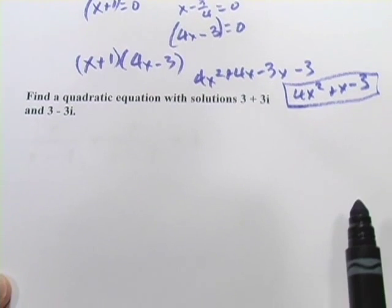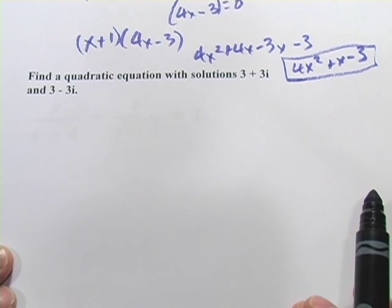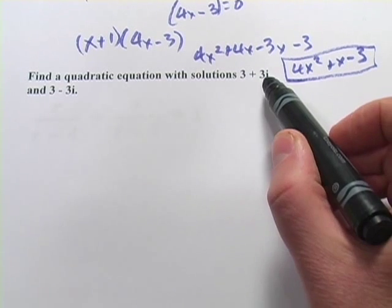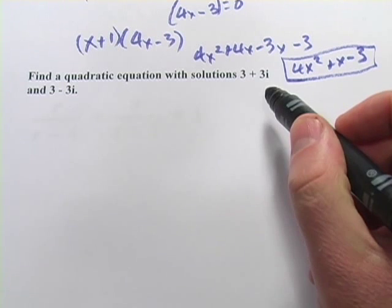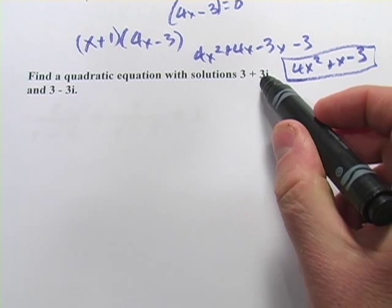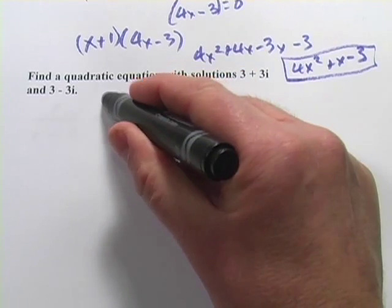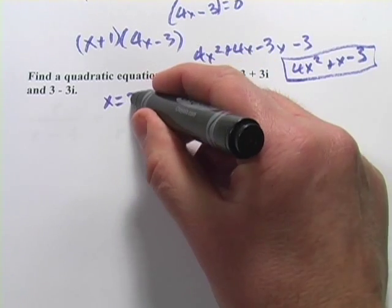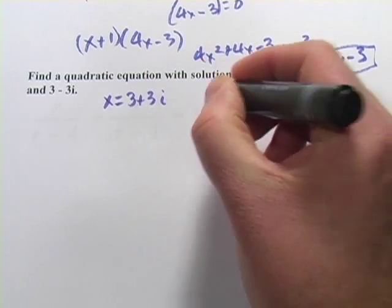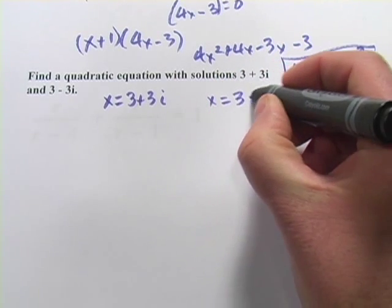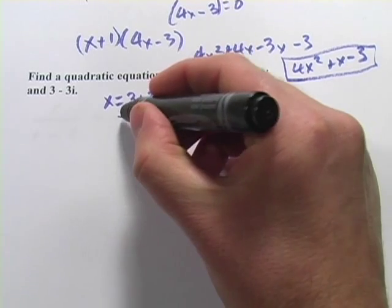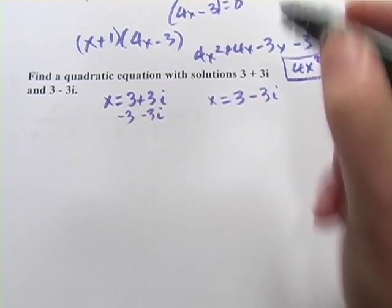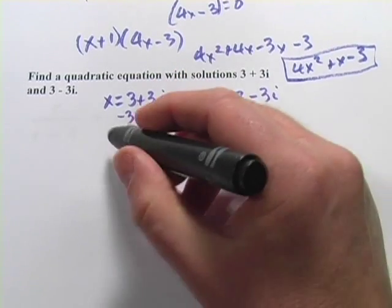All right, this next example is a little bit trickier. We're going to do the same thing, except in this case, we're starting with these complex roots with imaginary numbers. But really, we're going to do the same thing. So we'll start by writing these as x equals 3 plus 3i and x equals 3 minus 3i.